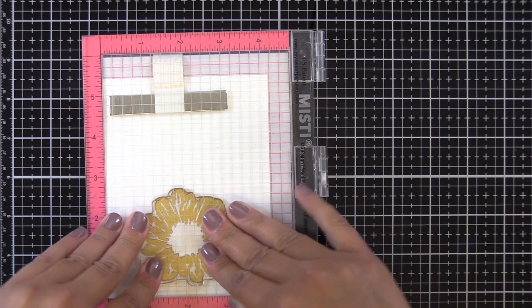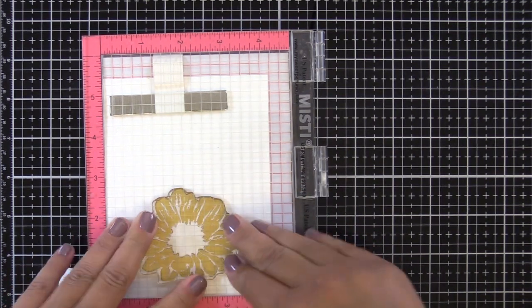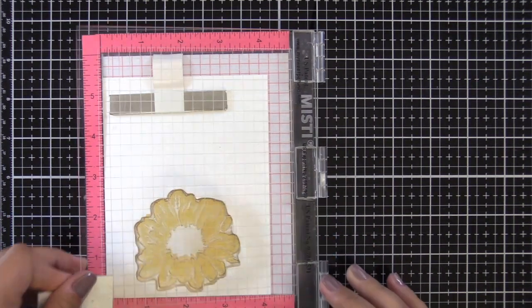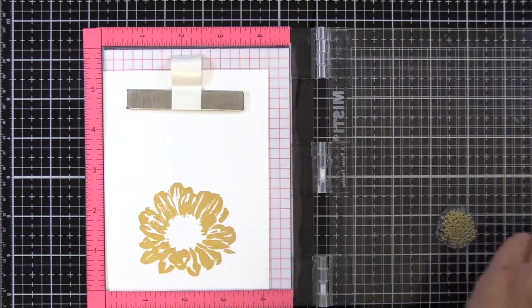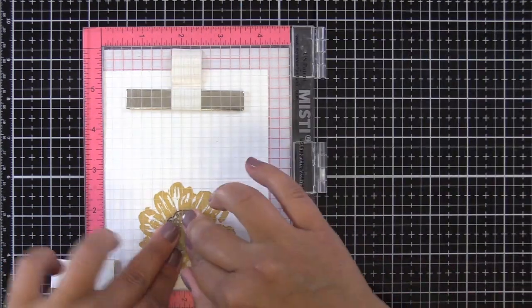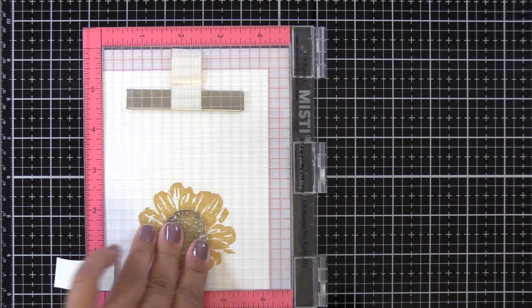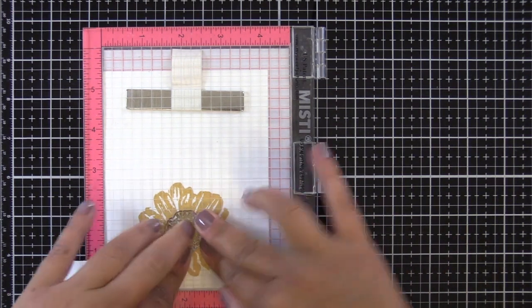And then for the center of the daisy I'm going to use antique gold. I stamped another flower and just swapped the two inks, so I did the flower in antique gold and then the center in enchanted just to kind of switch it up a little bit.